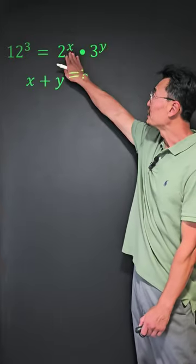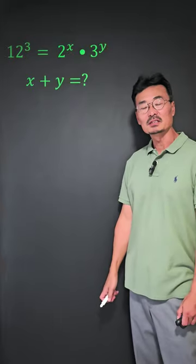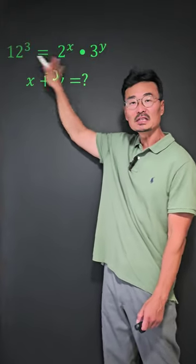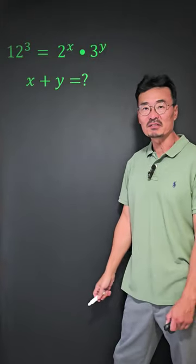Instead of solving for the x and the y value on the right side of the equal sign, it's better if we take that 12, change it into the format of the right side.